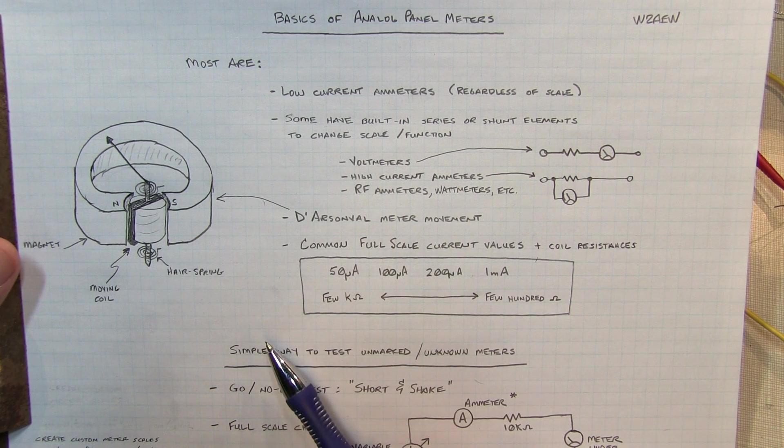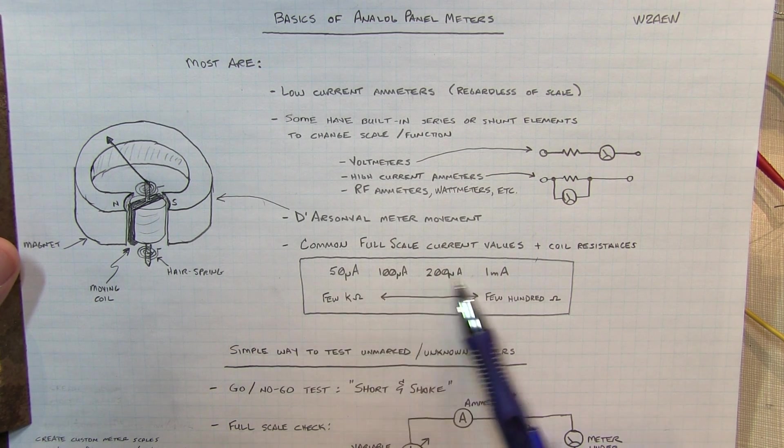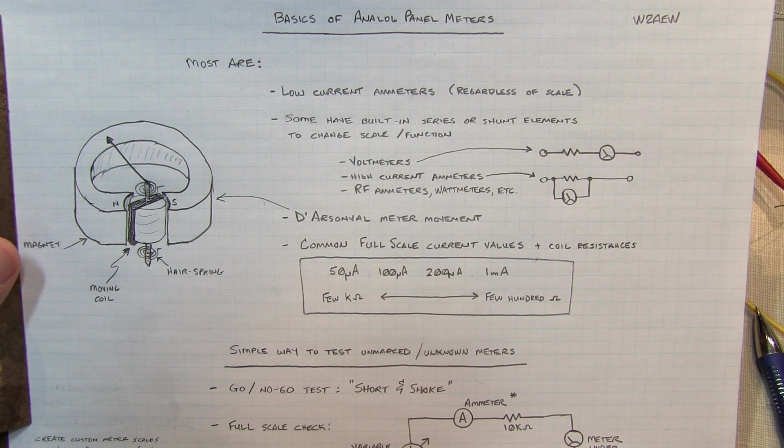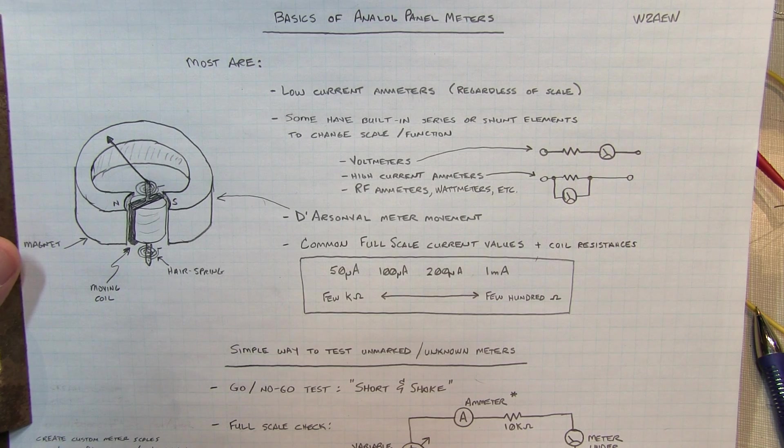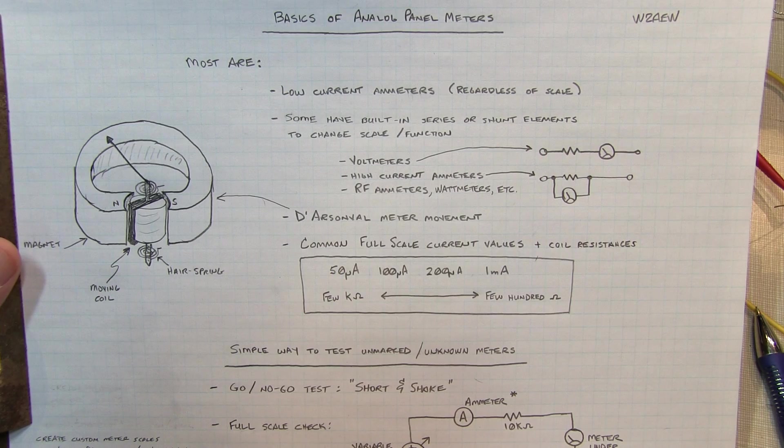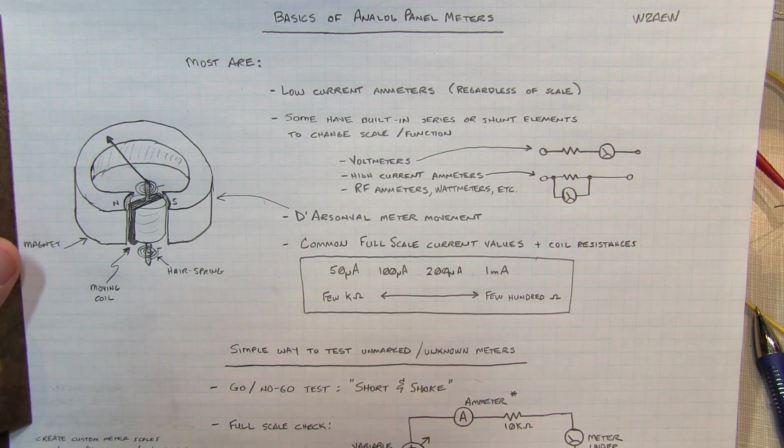Now, the resistance of the wire in the moving coil will range typically from a few kiloohms for the most sensitive meters to maybe a few hundred ohms for the least sensitive meters. Of course, there's a lot of variation in here, and we'll take a look at how we can actually go measure and characterize what a meter is. So if you've found one that you want to use in a project, we can determine what the full-scale reading is so you can apply the appropriate external components to make that meter work in your project.